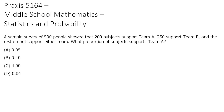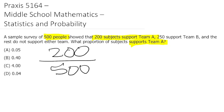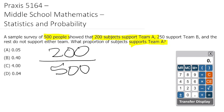All right, so let's start with our first question. It says, a sample survey of 500 people showed that 200 subjects support Team A, 250 support Team B, and the rest do not support either team. What proportion of subjects supports Team A? So in our question, we're told there are 500 people total, 200 of which support Team A. So we need to figure out what proportion of subjects support Team A and make sure that our answer is in decimal form. So we know that 200 of the 500 people support Team A. On this exam, you're going to have an on-screen graphing calculator, so you'll just plug this into your calculator and you will get the answer, 0.40.